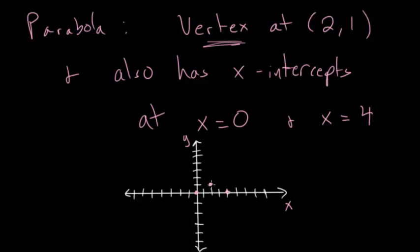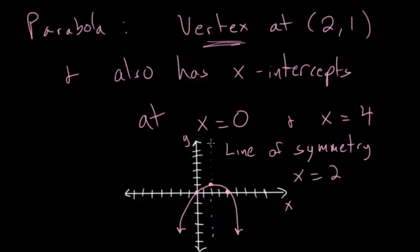So now we can connect the curve, essentially, and draw in that parabolic shape. But one thing you can notice is that we get a mirror image about that vertex. And in fact, we can talk about something called the line of symmetry, where essentially it's always the x value of the vertex. So in this case, x equals 2 is that line of symmetry. And what you can notice is that the x-intercepts are always spaced equally on either side of the vertex. So if one of them is two units to the left, then the other one would have to be two units to the right.